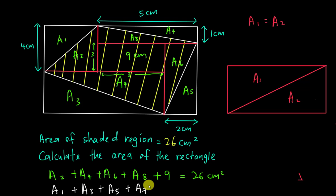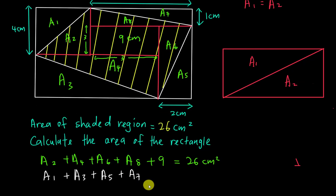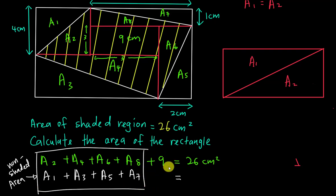All these white colored areas are basically the non-shaded area - A1 plus A3 plus A5 plus A7. I just need to know what the non-shaded area is. So I can conclude that since the shaded and non-shaded areas are the same, I just need to move the 9 to the other side. That's 26 minus 9, so I get 17. So the non-shaded area is 17.